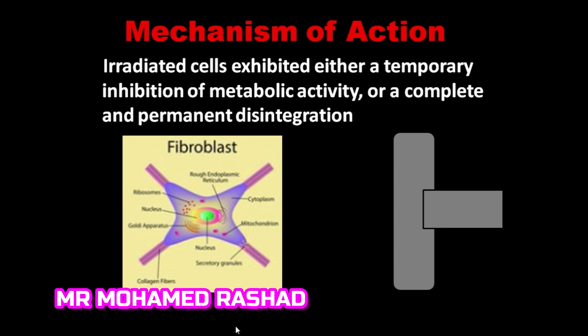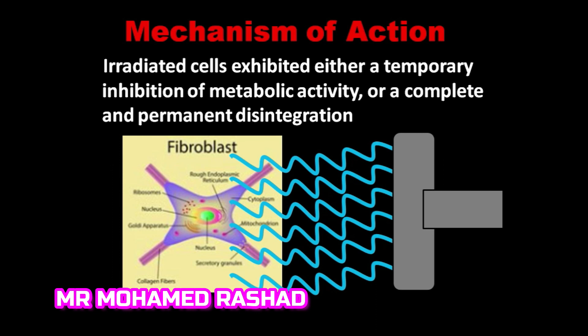How does it work? It actually makes damage to the fibroblasts in the conjunctiva or in the tissue that we want to stop the activity in. This damages the fibroblasts or at least stops the metabolic activity and growth.